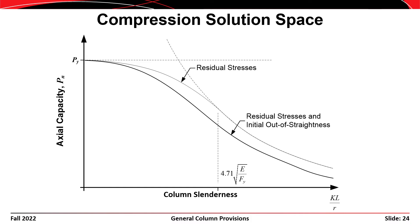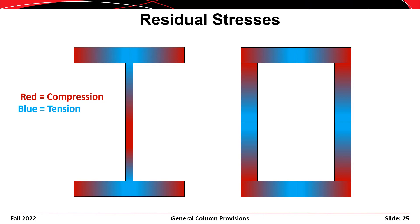Including the effects of both residual stresses and initial out-of-straightness, the design curve drops further below the academic curves. Initial out-of-straightness reflects the fact that members coming out of a rolling mill are never perfectly straight. Even a small deviation from straight can compromise the compressive strength of a member. The AISC commentary lists nine factors affecting column strength, with residual stresses and initial out-of-straightness being the two most significant.